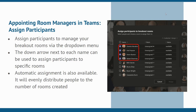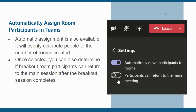Assigning participants manually is almost identical whether you do it before or during a meeting. Navigate to your breakout rooms settings and select assign participants. Click on the down arrow next to each participant and choose which room you want to assign them. You can also use the checkbox next to each participant's name to move groups of individuals to a room rather than manually assigning each one. In your breakout room settings, you can choose to assign participants manually or automatically. If you choose the automatic option, it evenly distributes people to the number of rooms you've created.